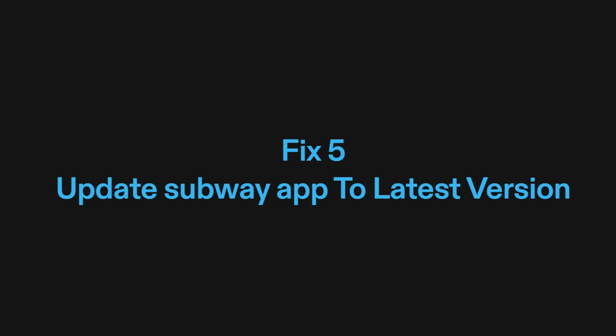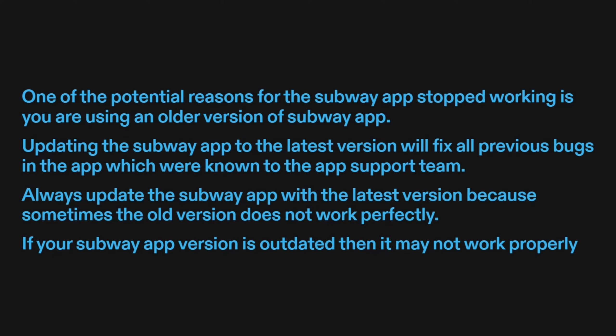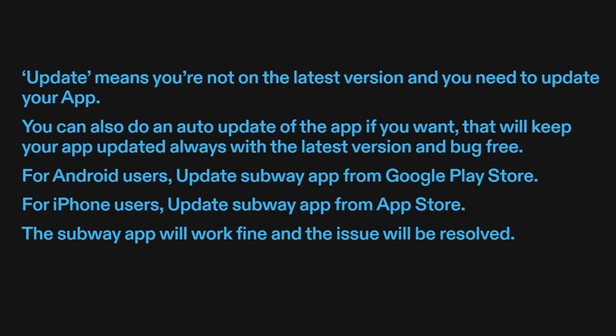Fix five: update the Subway app to the latest version. One of the potential reasons the Subway app stopped working is you're using an older version. Updating the app to the latest version will fix all previous bugs known to the support team. Always update the app because sometimes the old version does not work perfectly. You can also enable auto-update to keep your app always up to date and bug-free.